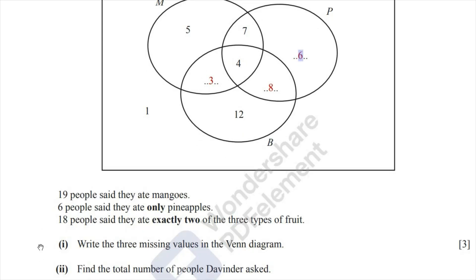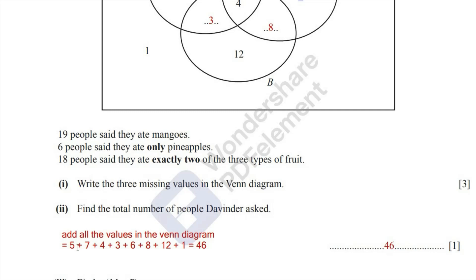Question 2: Find the total number of people Devinder asked. We simply add all the numbers in the Venn diagram — including the region representing people who didn't eat any of the fruits. So 5 plus 7 plus 4 plus 3 plus 6 plus 8 plus 12 plus 1 equals 46.